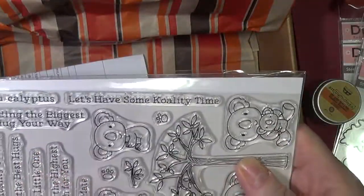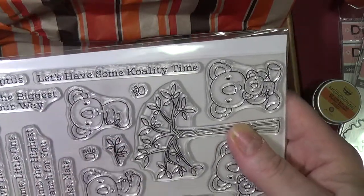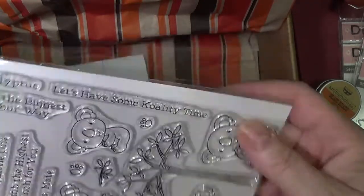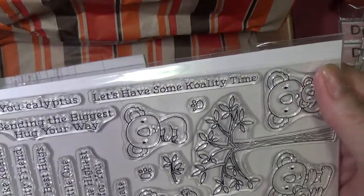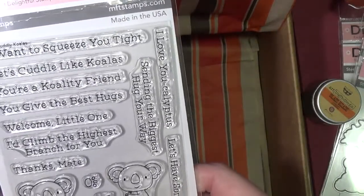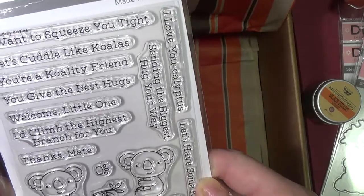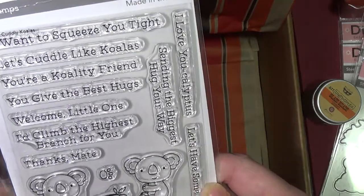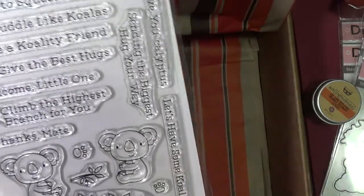And then hang in there. Remember hang ten? I don't know what that was about, but everybody used to say it. And let's have some koala quality time. I love eucalyptus. Sending the biggest hug your way. I want to squeeze you tight. Let's cuddle like koalas. You're a koala-tea friend. You give the best hugs. Welcome little one. I'd climb the highest branch for you. Thanks mate.